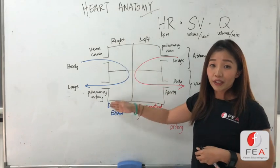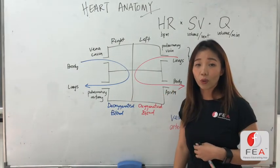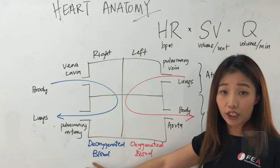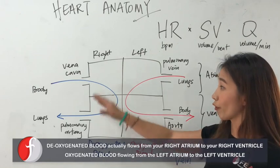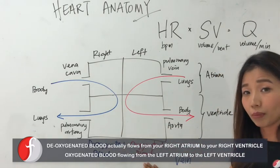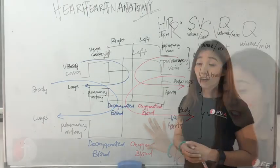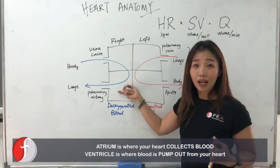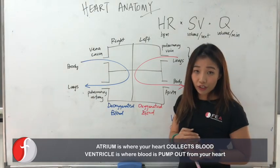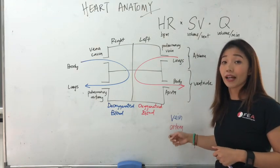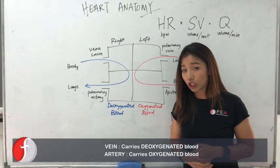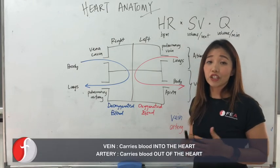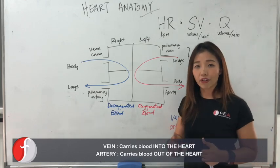Now, if you look at the different parts of your heart, there are a couple of blood vessels going in and out of your heart. You will see that on the right side, it carries the deoxygenated blood. So the deoxygenated blood actually flows from your right atrium to your right ventricle, and you have oxygenated blood flowing from the left atrium to the left ventricle. Now, you will realise that the atrium is where your heart receives blood, and the ventricle is where blood is actually pumped out of your heart. You generally have what we call veins and arteries. Veins generally carry deoxygenated blood, whereas arteries generally carry oxygenated blood. Another characteristic of veins is that they generally carry blood into the heart, whereas arteries carry blood out of the heart.